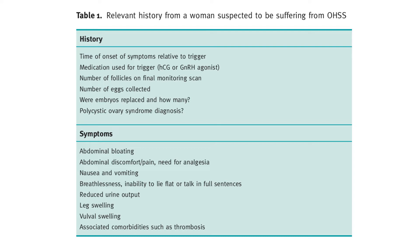Signs and symptoms — in the history, you want to find out the time of onset of symptoms relative to the trigger, medication used for trigger, number of follicles on final monitoring scan, number of eggs collected, what embryos were replaced and how many, and any polycystic ovary syndrome diagnosis. Symptoms include abdominal bloating, abdominal discomfort and pain, need for analgesia, nausea and vomiting, breathlessness, inability to lie flat or talk in full sentences, reduced urine output, leg swelling, and associated comorbidities such as thrombosis.